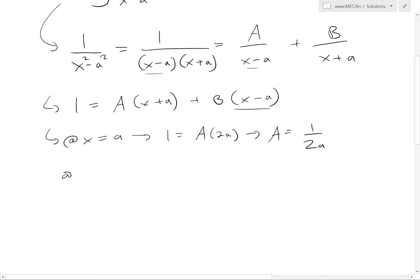And now at x equals negative a, so that this cancels, we are left with 1 equals B times negative 2a. So B is equal to negative 1 over 2a. So now we have the two coefficients.